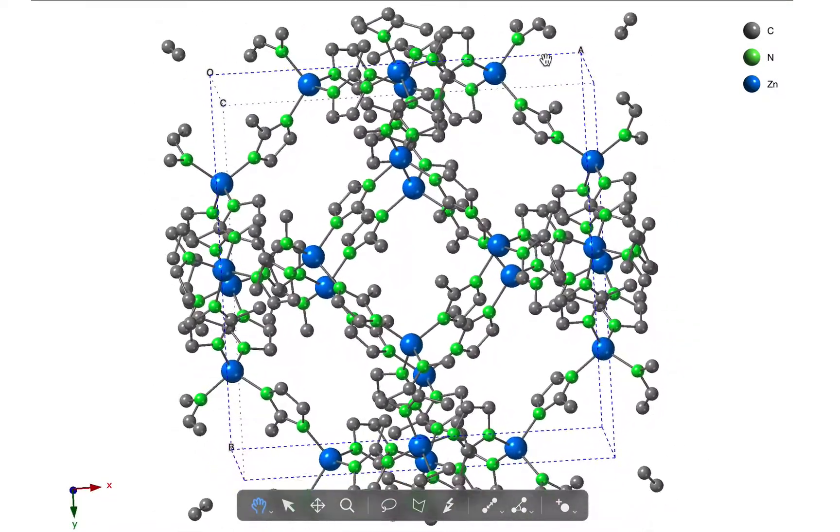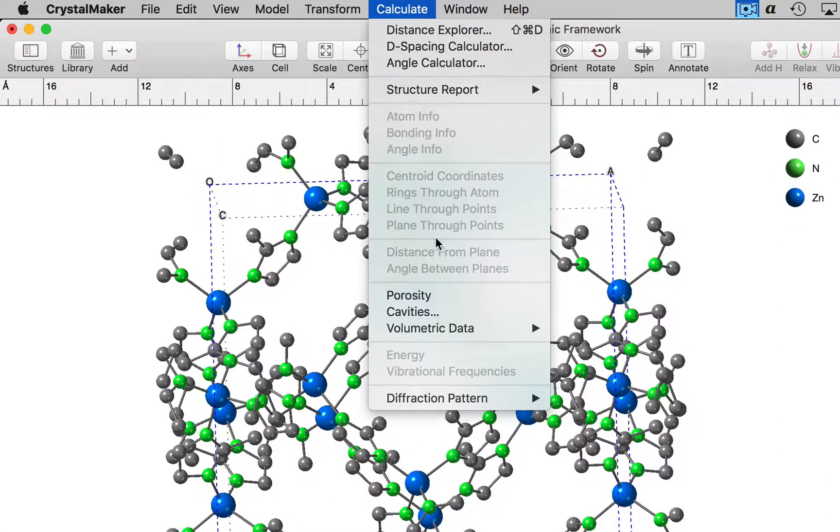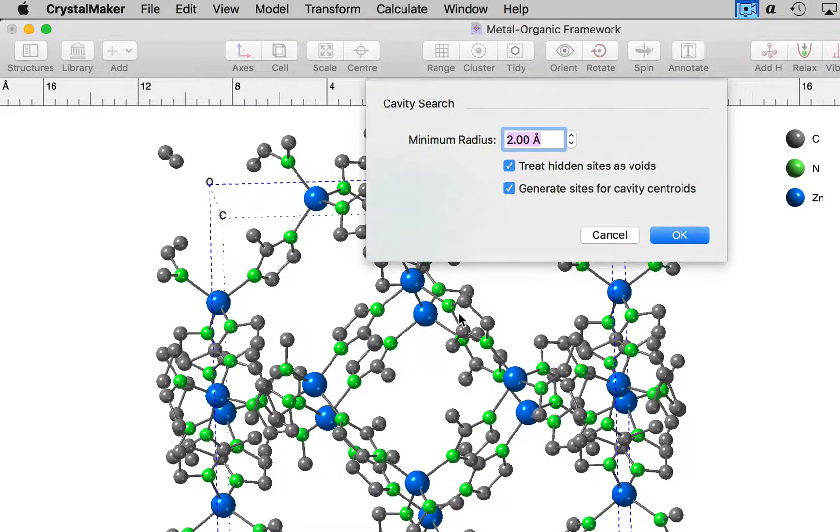We can determine the coordinates of that cavity using the calculate cavities command. We can specify the minimum radius of the cavity that we're interested in. Because this is a very open structure, I'm going to specify three angstroms as my minimum cavity site.